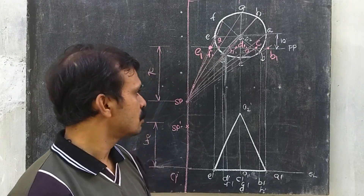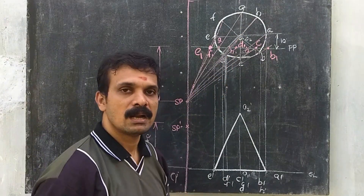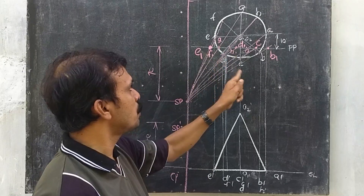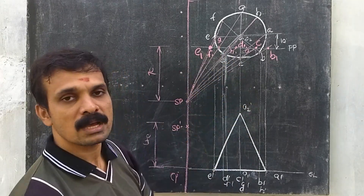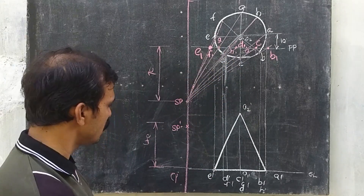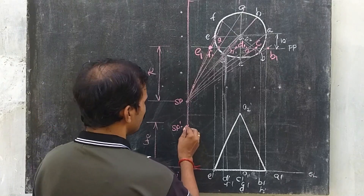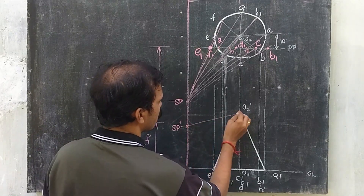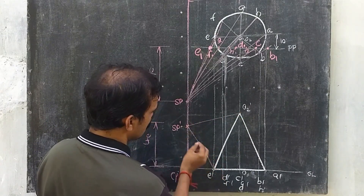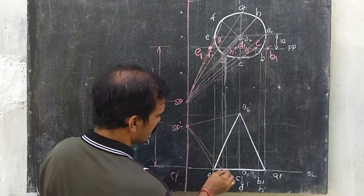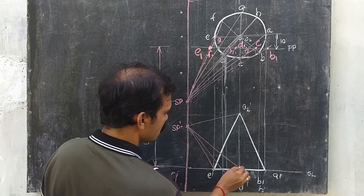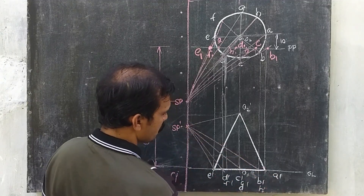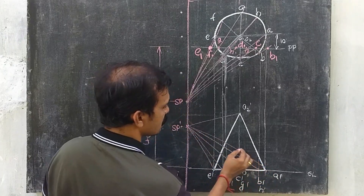So we have obtained the corresponding points A1, B1, C1 on the picture plane. Now connect SP' with O2', and also SP' with E', D', F', C', H', and A' in the front view to obtain the projected intersections on the perspective picture plane.